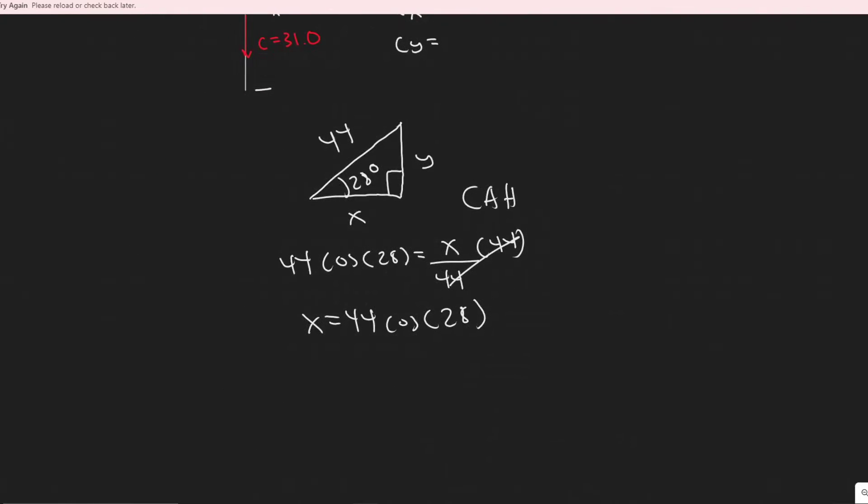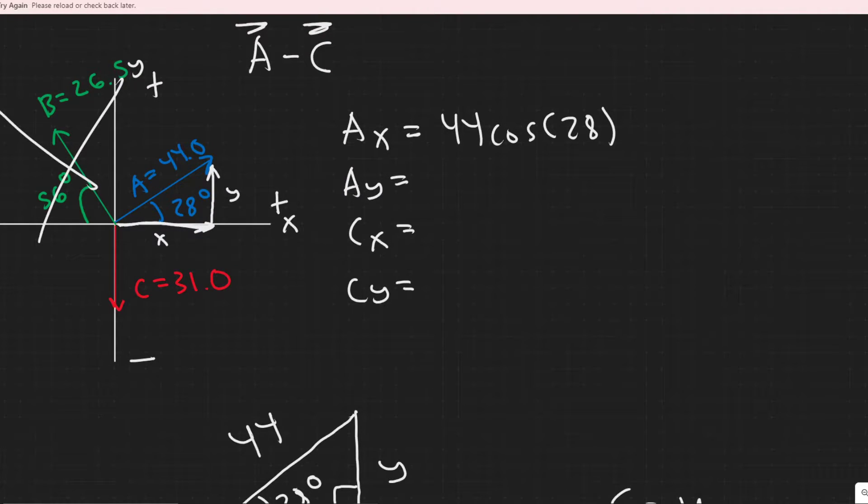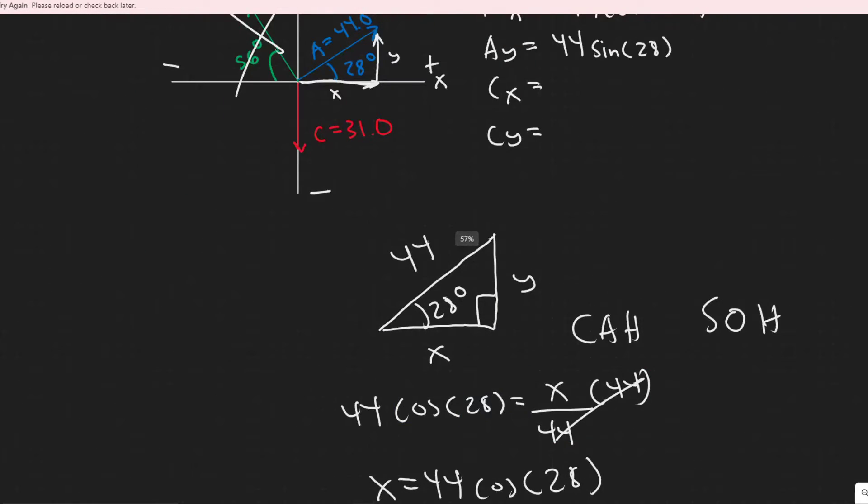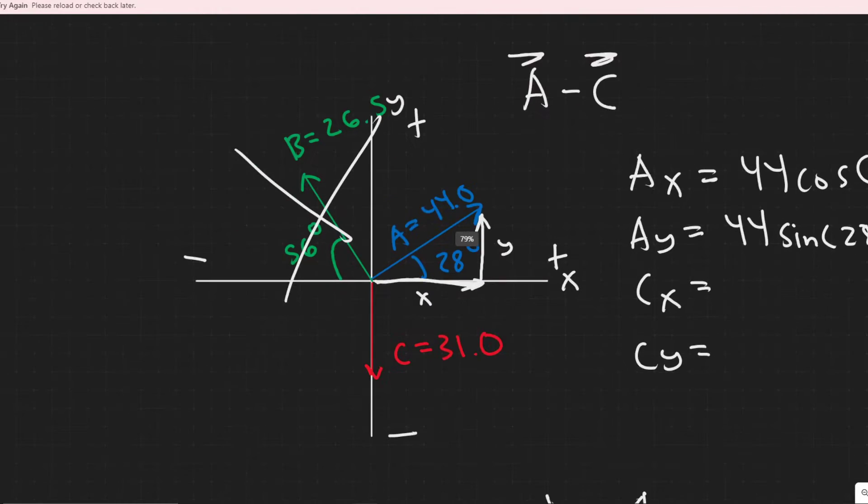So this is just 44 cosine of 28. Now for the y component, you basically just do the same thing you did here, but with sine. So you should know the sine of an angle is opposite over hypotenuse. So in this case, our opposite side is y and our hypotenuse is 44. Multiplying both sides to get y by itself and you get 44 sine of 28 as your y component of your A vector. Notice that we just use trig to get these. And it's also pointing upwards. So as I said before, upwards is positive. So we can just leave it like that.